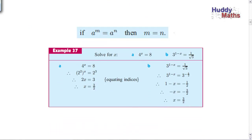Here's the maths behind it: get both sides as a power of a, then the two indices or exponents must be equal. For example, 4 to the x equals 8. We try to make both sides a power of a common base — 4 is 2 squared and 8 is 2 cubed. Power raised to a power: you multiply the powers. So 2x equals 3, and x is 3 over 2, equating indices.